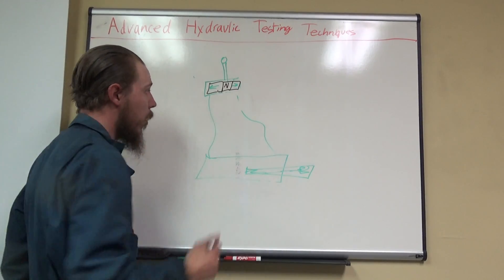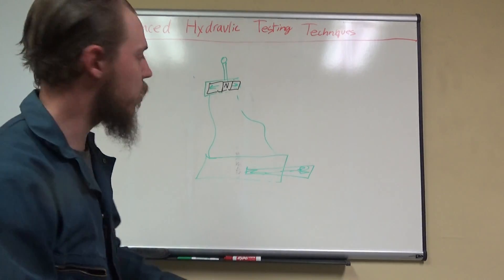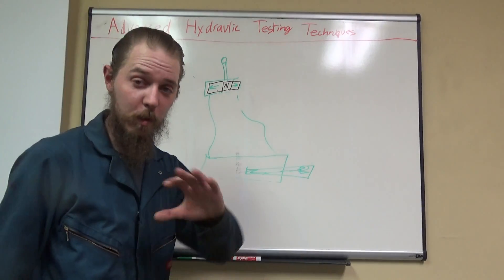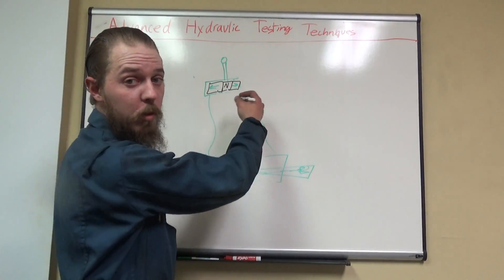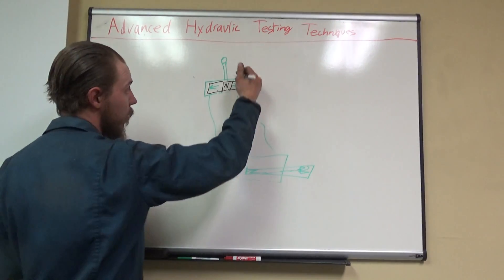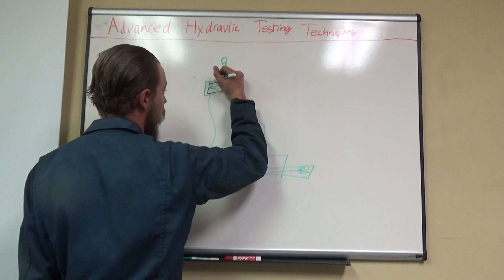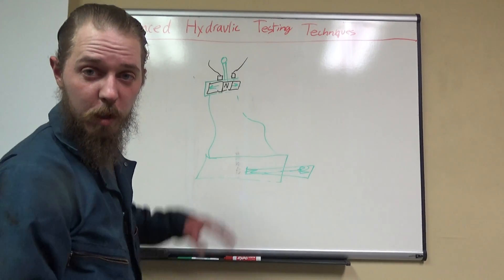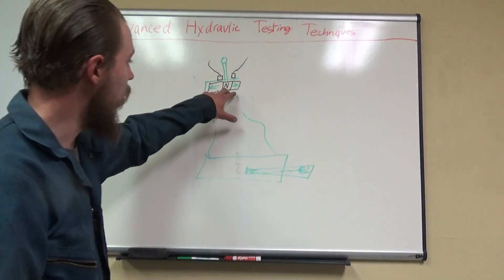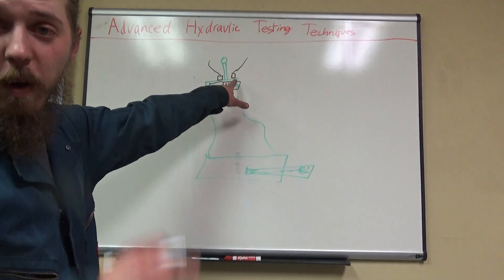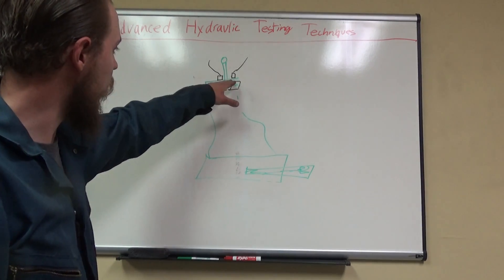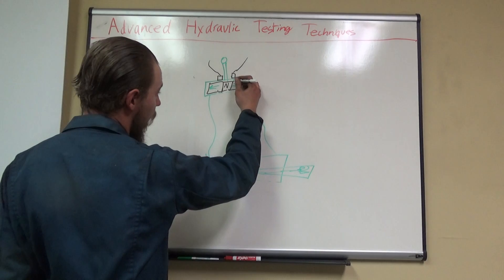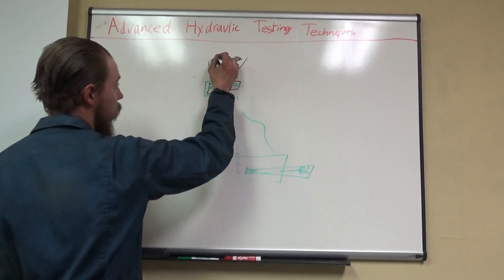All right, so when we go forward, what we actually have is a little neutral block in the center where, depending on the system design, there should be no flow there—open or closed center, that's a whole different ball game right now—but neutral, so no fluid flow to either actuator. So if we were to put our pickup on either side with our little lead, we would expect to see no movement or no vibration of fluid within that section because it should be neutral.